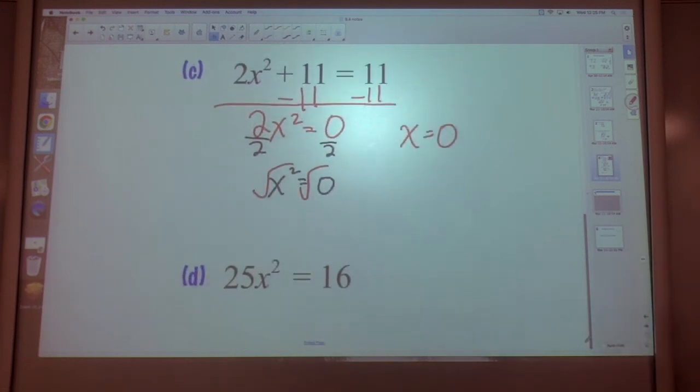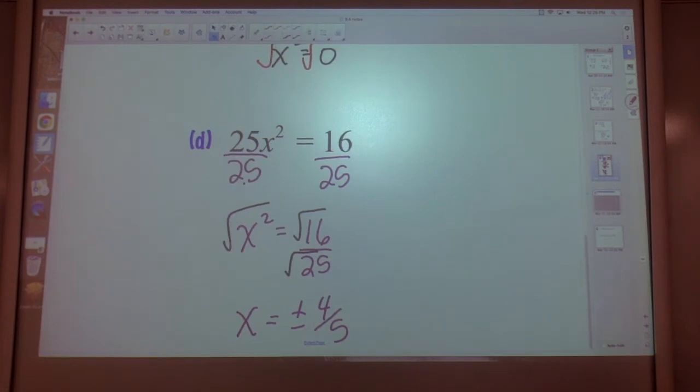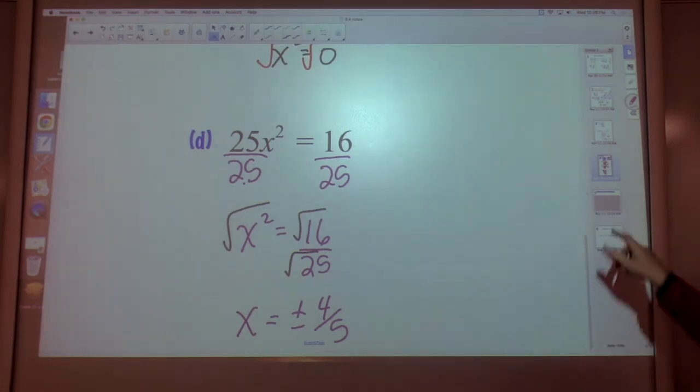D. Try this one. Divide by 25. Don't get a decimal. Leave it as a fraction. x squared equals 16 25ths. Square root the numerator. Square root the denominator. Square root of 16 is 4. Square root of 25 is 5. You have a positive or negative 4 5ths. After all that worked, don't forget the plus or minus. You need them both.